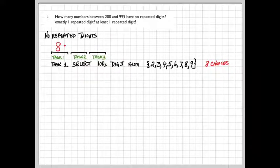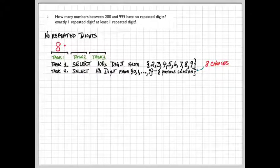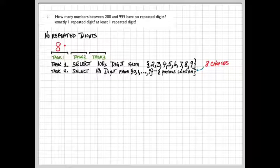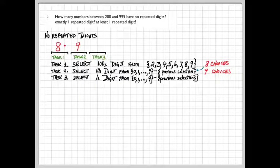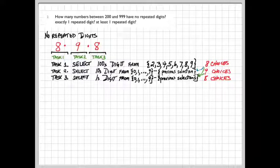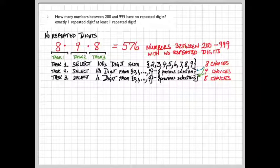The second task will be to select the tens digit. Now the tens digit can be selected from anything zero through nine, except for whatever the one choice was that was made in task one. So we restrict from all ten possible digits to nine choices. And task three will be to select the ones digit, which also can be done from the set of all digits zero through nine, except for the two that were selected previously. That means there will be ten minus two, or eight choices. So the total number of ways we can create a three-digit number between 200 and 999 that has no repeated digits will be 576.